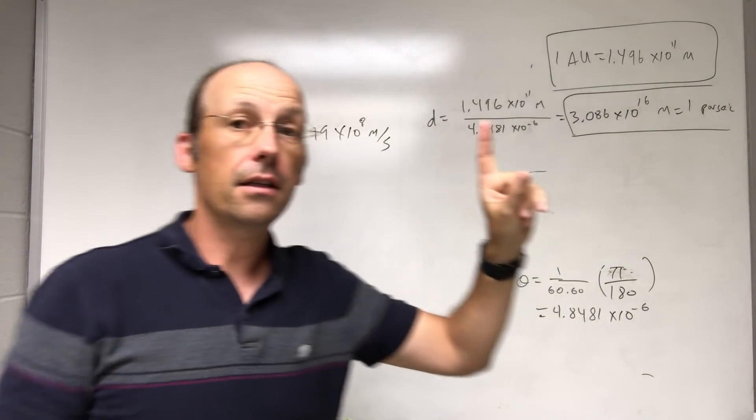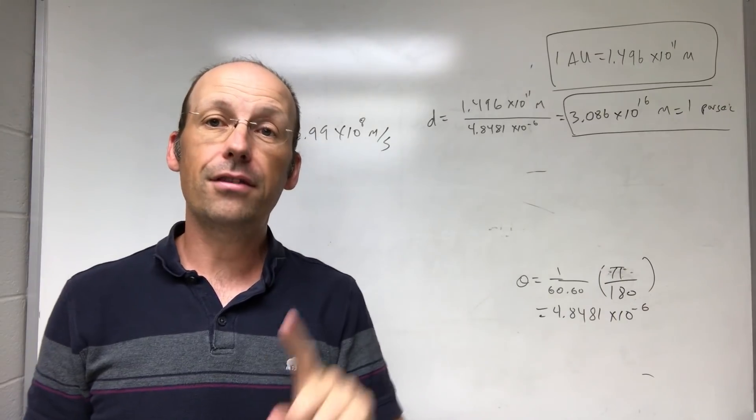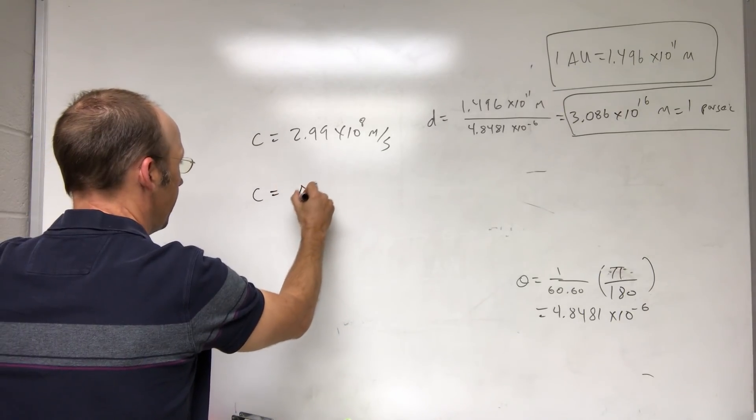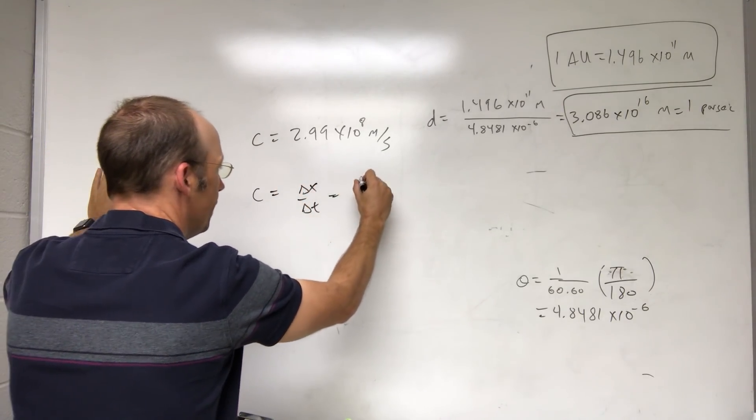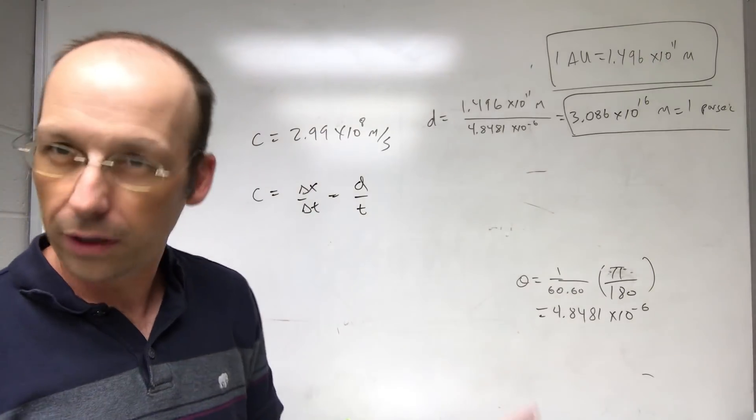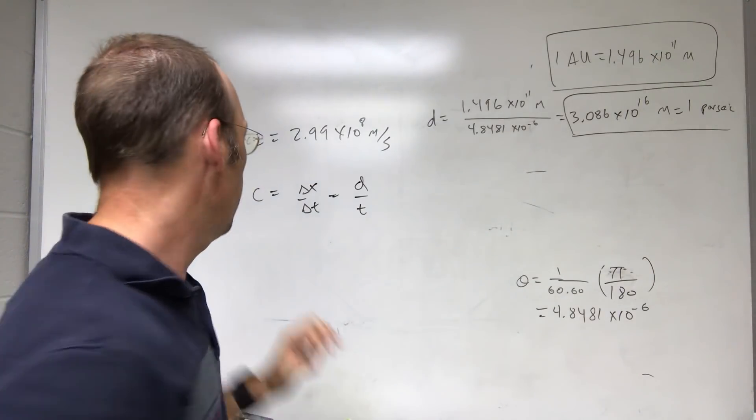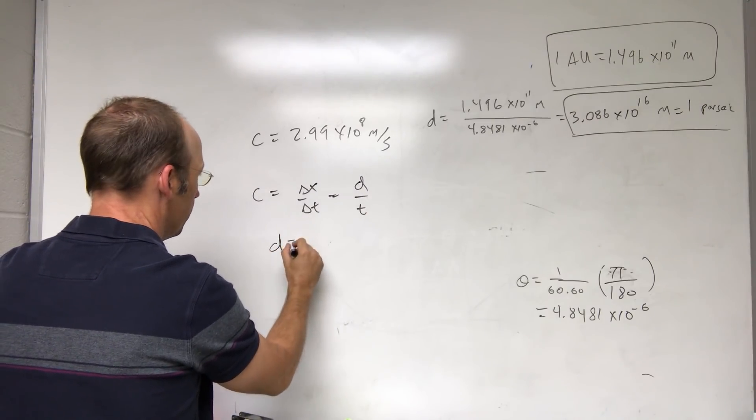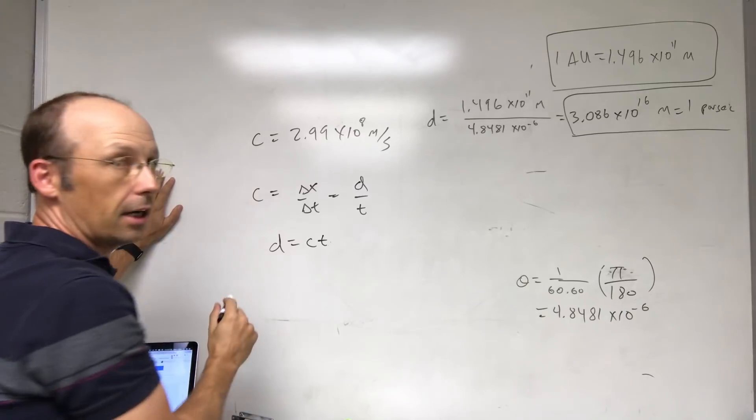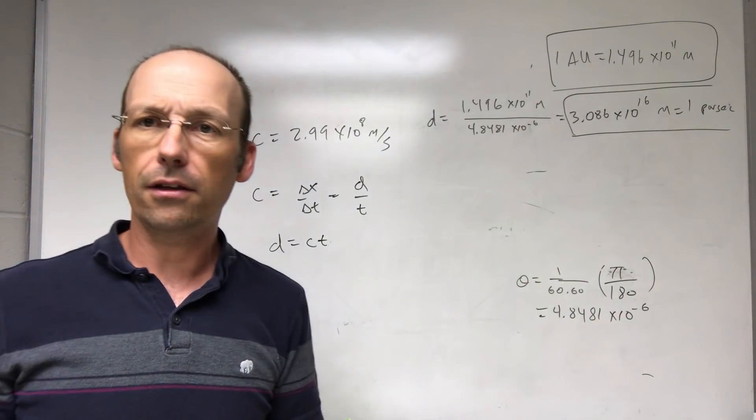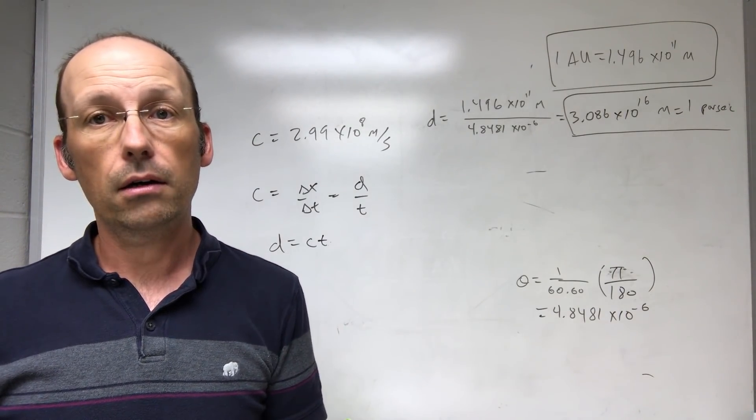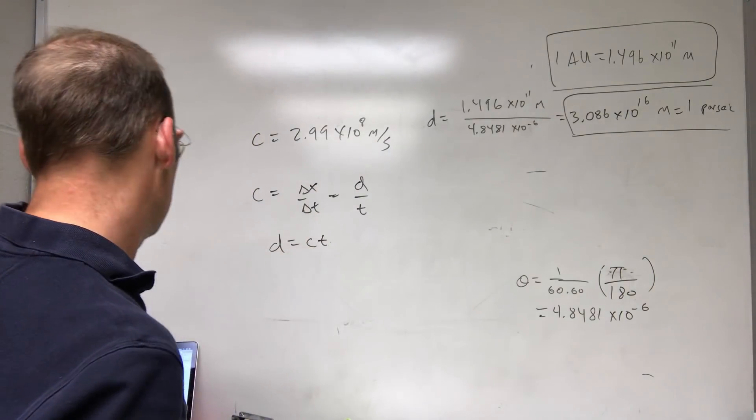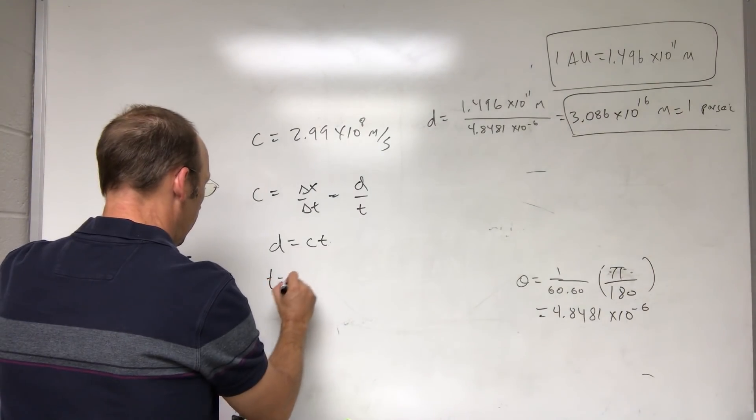So the unit of light year is the distance light travels in one year. So C equals delta X over delta T. If you want to call it D over T, that's not really the best way, but I'll forgive you for that. You can do that, D over T. So I want to find D. So D equals C times T. So the speed of light times the time. So how long is one year? Well, that's one year is the time, but I want it in seconds to cancel the seconds in meters per second. So T equals one year.